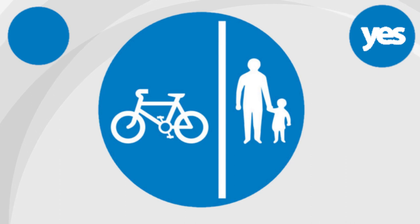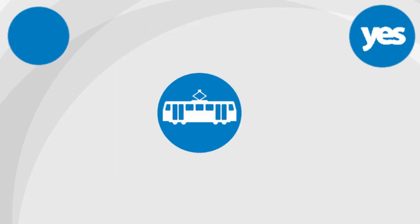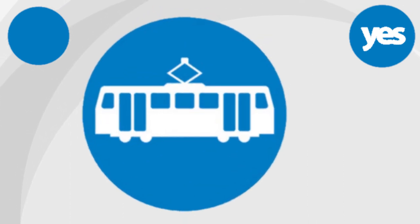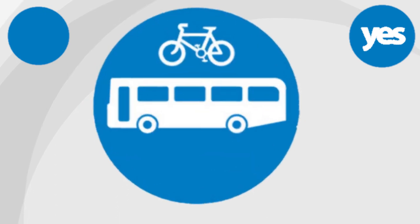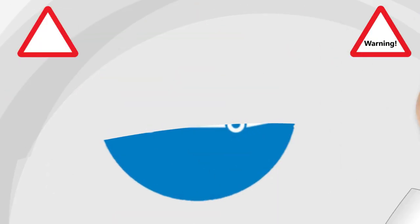End of direction. You must go around in a clockwise direction. Now that we've completed the signs giving us orders, let's move on to the triangular signs. These signs are a warning — something that we must be careful about.